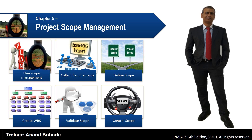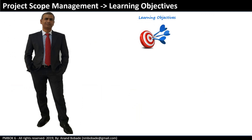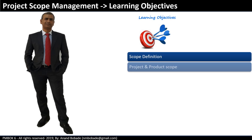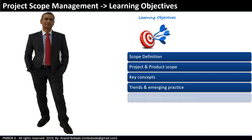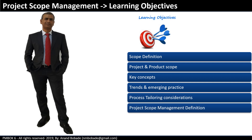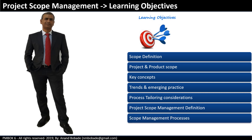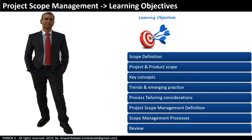In this session you will go through the overview of the project scope management knowledge area. This is an important knowledge area for a project manager as it helps build a clear understanding of the project scope and put boundaries around it. Learning objectives of this session: we'll start with the scope definition, the difference between product scope and project scope, key concepts, trends and emerging practices, process tailoring considerations, and the scope management process definitions.